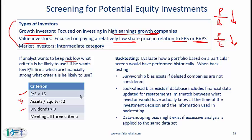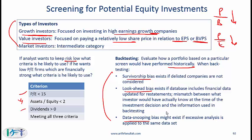When you come up with a screen and decide which stocks to buy, one of the things you should do is back testing. You should ask: if I had used the same screen to buy something three years ago, how would that portfolio have performed? The process of evaluating how a portfolio based on a particular screen would have performed historically is called back testing. When doing back testing, be aware of survivorship bias, look-ahead bias, and data snooping bias.